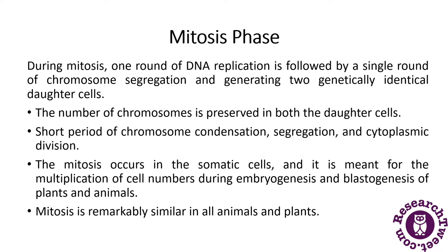The number of chromosomes is preserved in both daughter cells — the number of chromosomes is exactly the same in the two daughter cells, and the genetic material received from the parent cell is the same in the daughter cells. Two daughter cells are formed in this process.